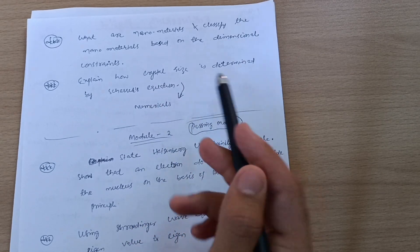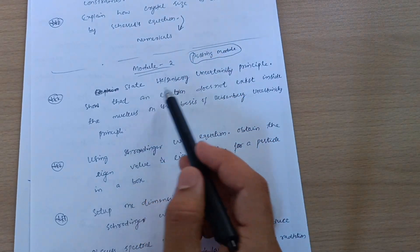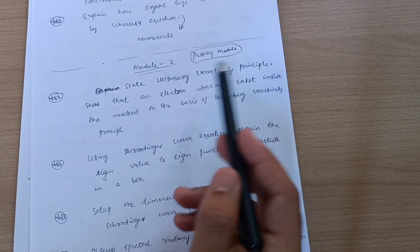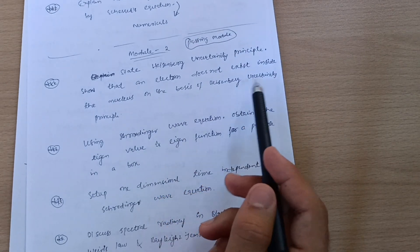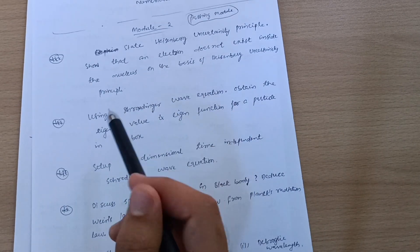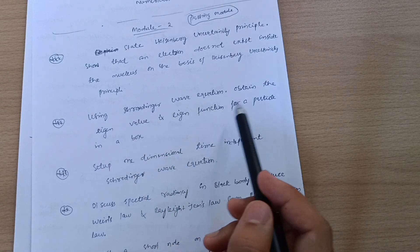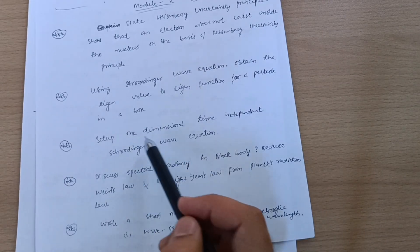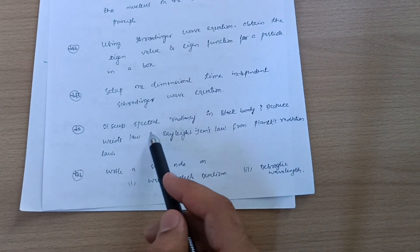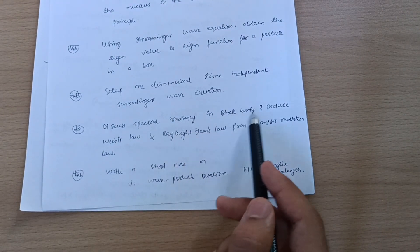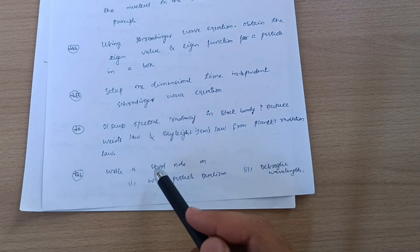Next is Module 2, which is again a passing module. State Heisenberg's uncertainty principle. Show that an electron does not exist inside the nucleus on the basis of Heisenberg uncertainty principle. Using Schrödinger wave equation, obtain the eigenvalue and eigenfunction for a particle in a box. Set up one-dimensional time-independent Schrödinger wave equation. Discuss spectral radiance in black body. Deduce Wien's law and Rayleigh-Jeans law from Planck's radiation law.